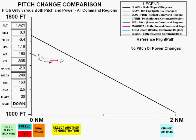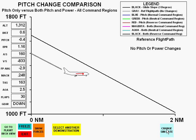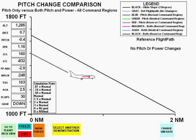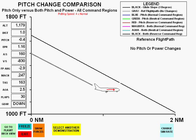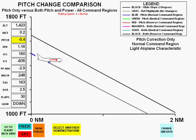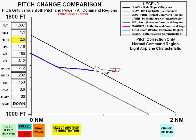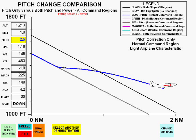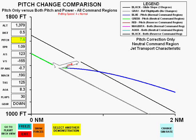The first plot shows a flight path parallel to the glide slope with no pitch or power changes made. We'll now change the plotting speed to four times the normal value. The first correction will be pitch-only in the normal command region.